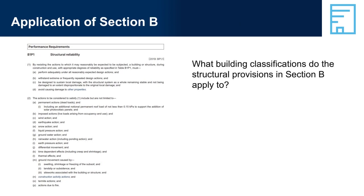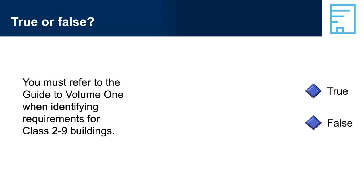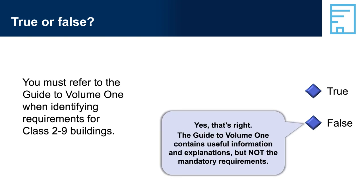Application of Section B: What building classifications do the structural provisions in Section B apply to? The structural provisions in Section B apply to all Class 2 to 9 buildings. Other sections of Volume 1 contain provisions that might apply to one or more classes of buildings and may have limitations in their application based on things like building height, rise in stories, etc. True or false: You must refer to the Guide to Volume 1 when identifying requirements for Class 2 to 9 buildings. False — the Guide to Volume 1 contains useful information and explanations but not the mandatory requirements.